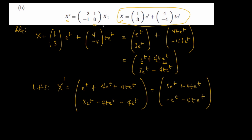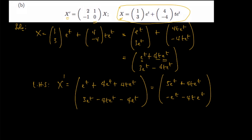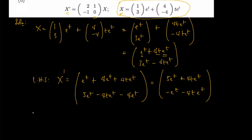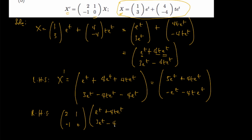For this equation to be valid, the left-hand side must equal the right-hand side. For the right-hand side, we have the matrix [[2, 1], [-1, 0]] times x. Substituting x in composite form: the matrix multiplies [e^t + 4t·e^t, 3e^t - 4t·e^t].